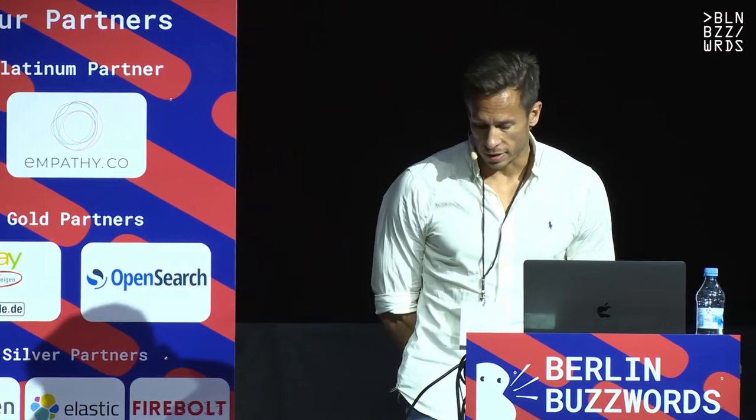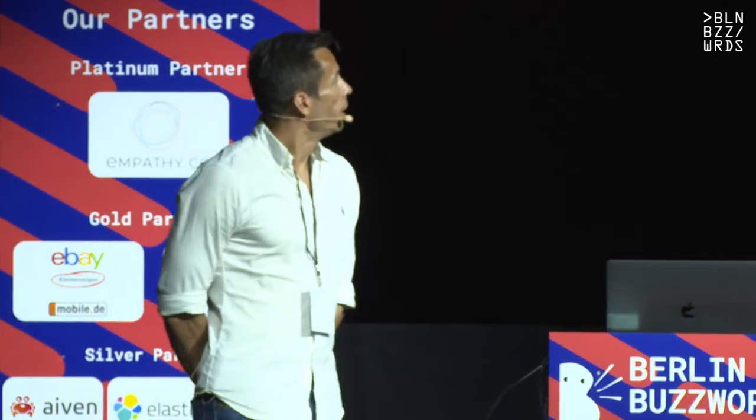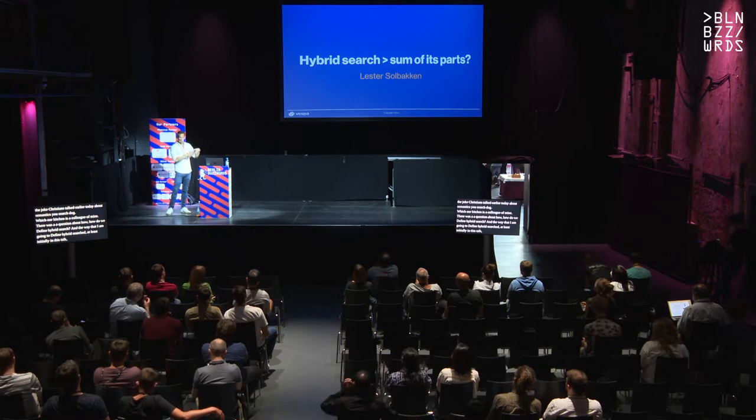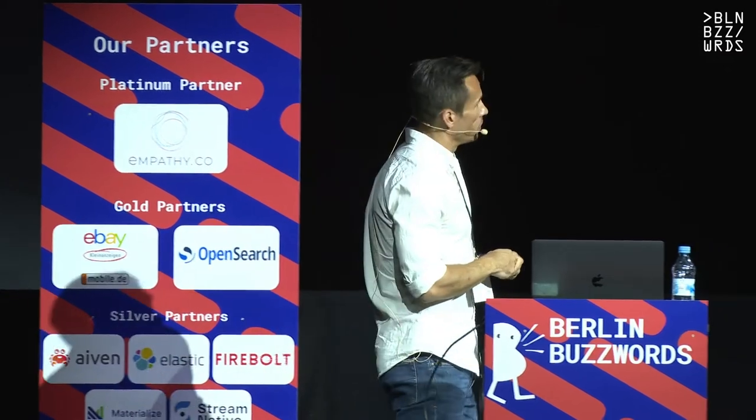Today I'm going to talk about hybrid search. For those of you that caught Joe Christian's talk earlier about semantic search — Joe Christian is a colleague of mine — there was a question about how we define hybrid search. The way I'm going to define it is the combination of traditional keyword term-based search like BM25 with the newer dense representation transformer-based search, and how we combine those to get something more than each of them individually.